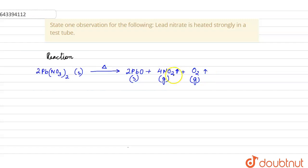Now when you have to state one observation, you can write the observation in the tube. That is, when you heat lead nitrate,